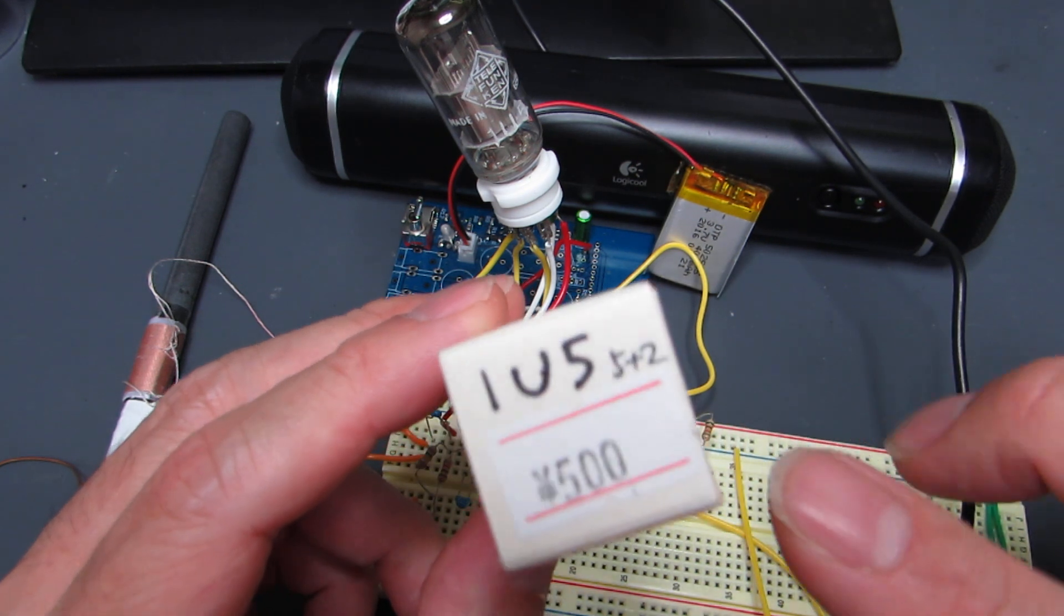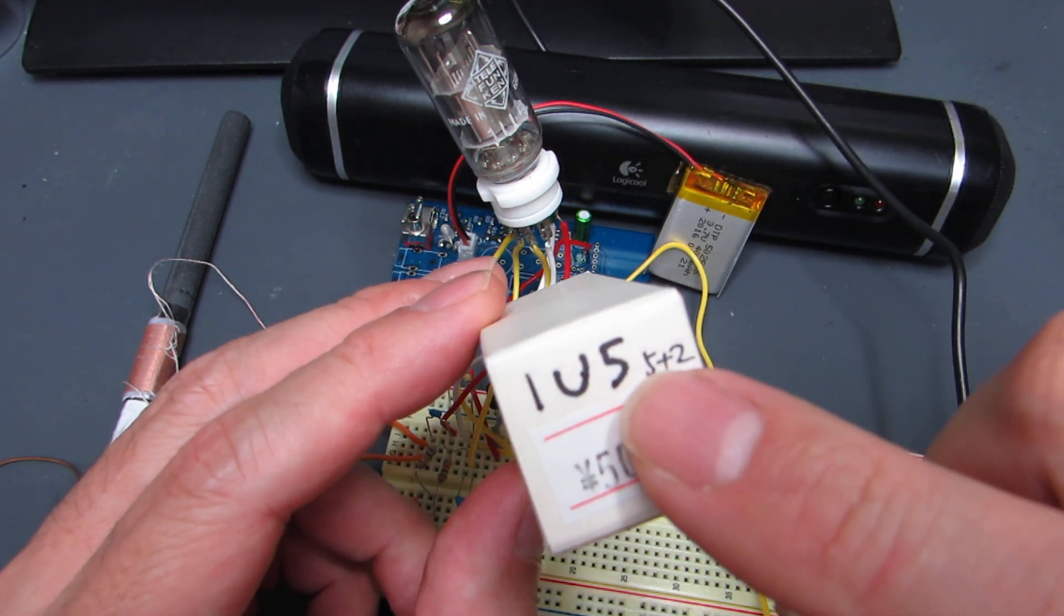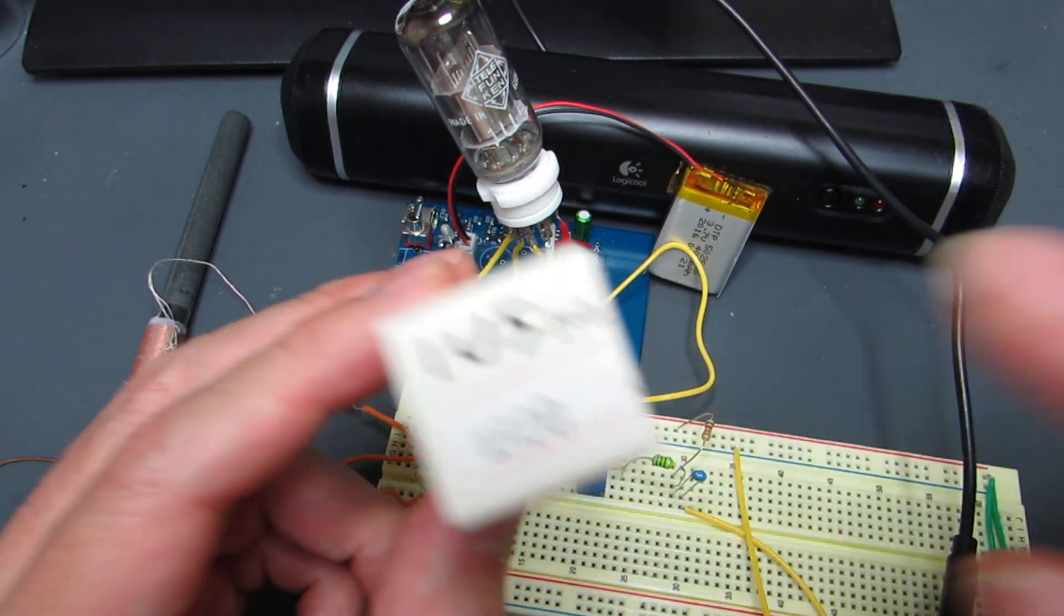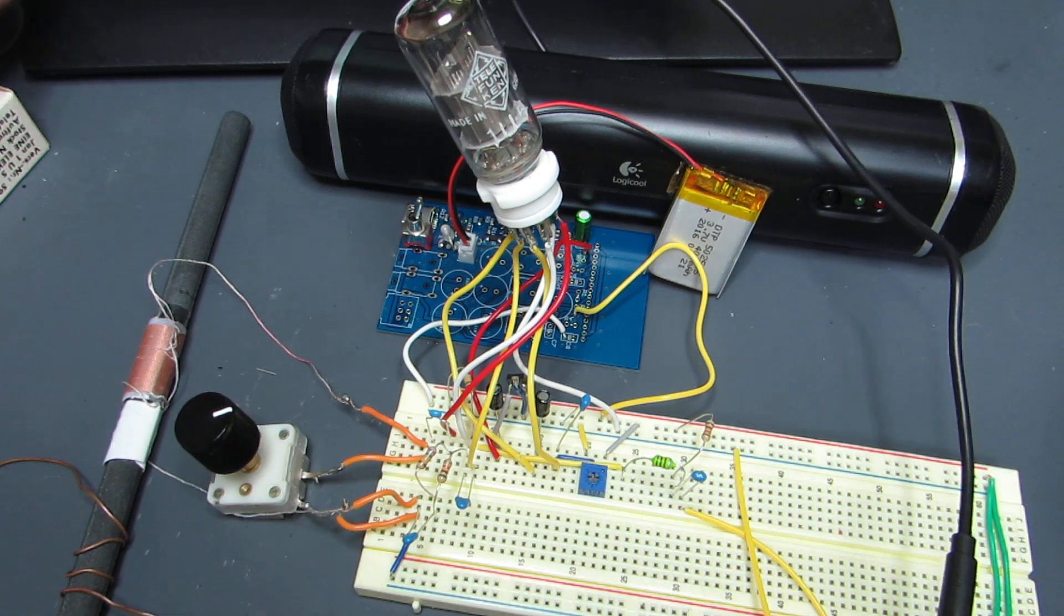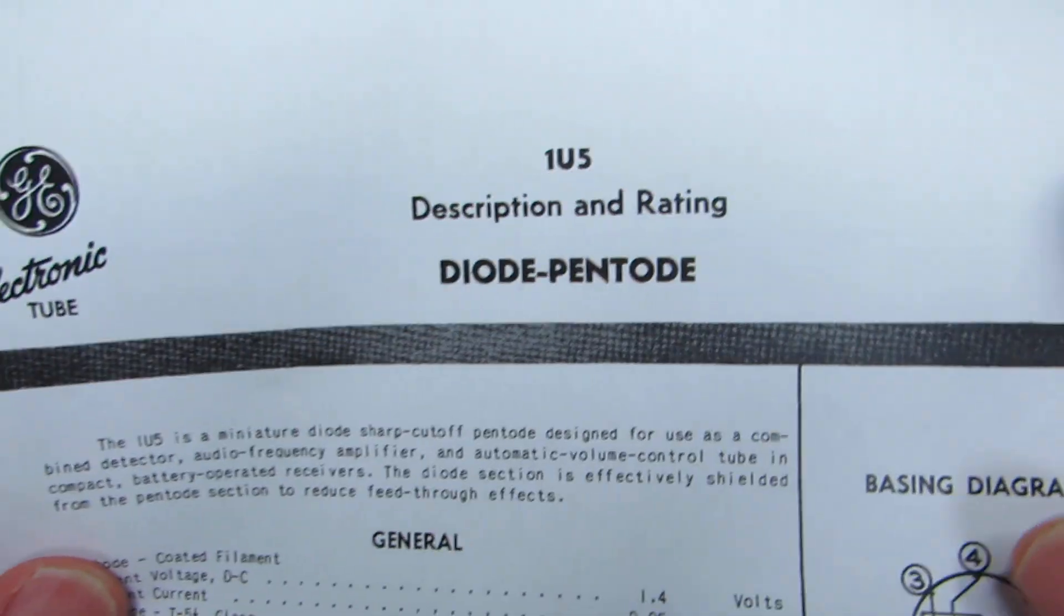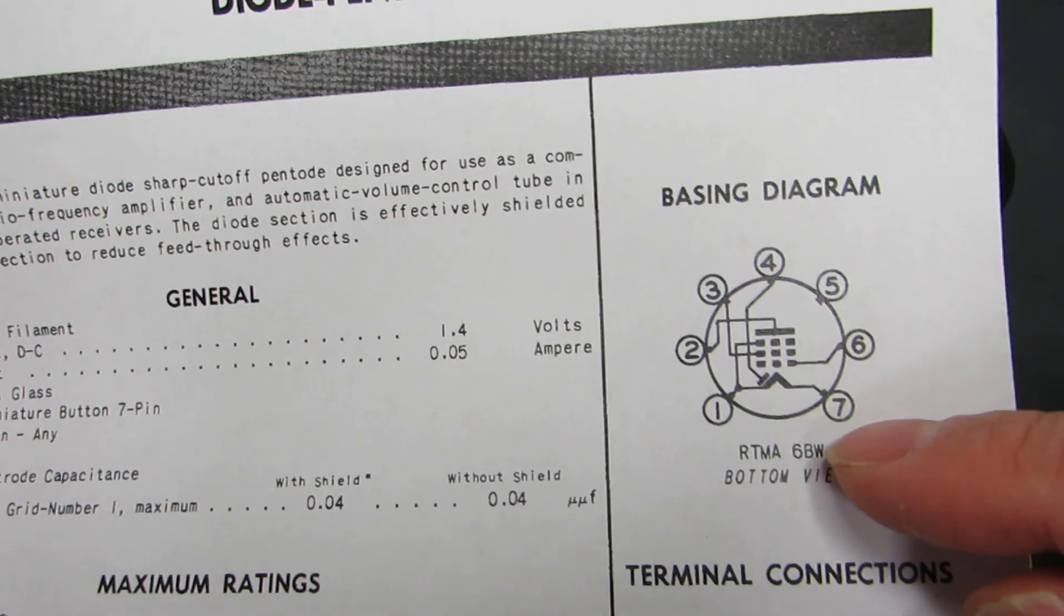Indeed, this tube is very special because it combines pentode with diode. I quickly found the data sheet on the net, and it says diode pentode inside.